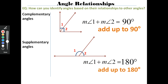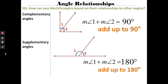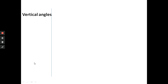The definition of supplementary angles: angles that add up to 180 degrees. One thing to realize is angles don't have to be adjacent — they don't have to be together — in order to be supplementary or complementary.